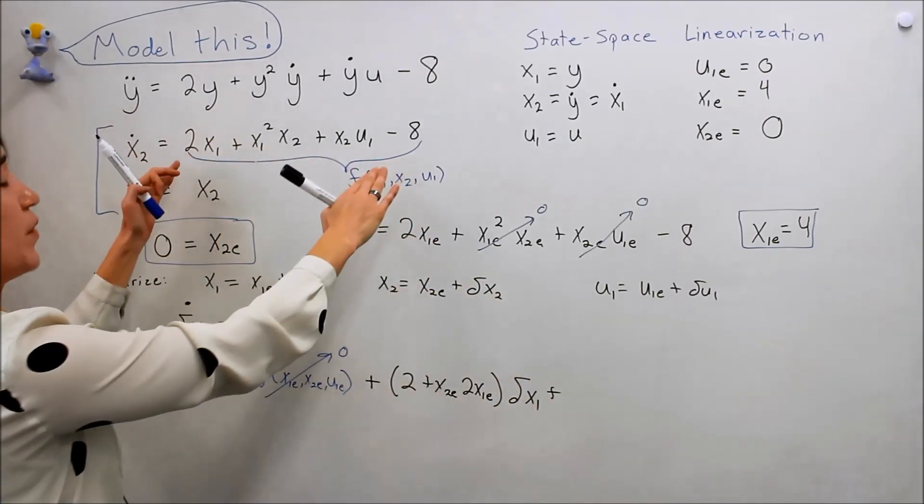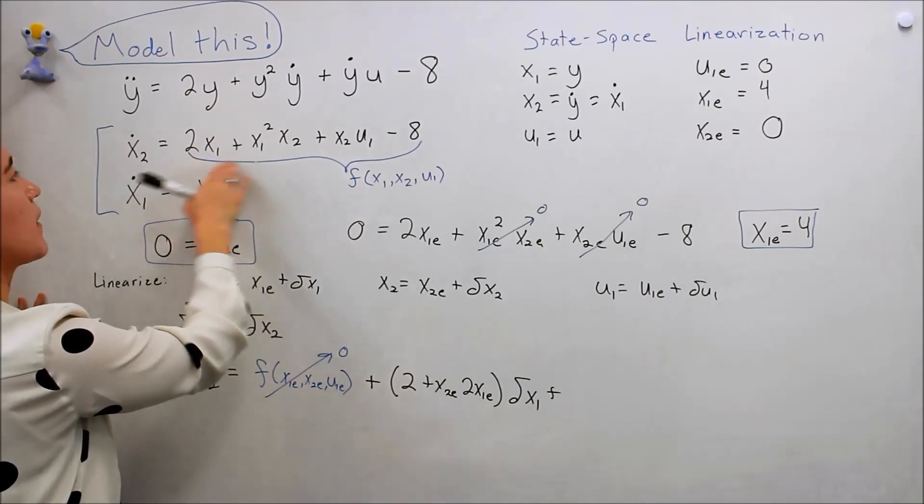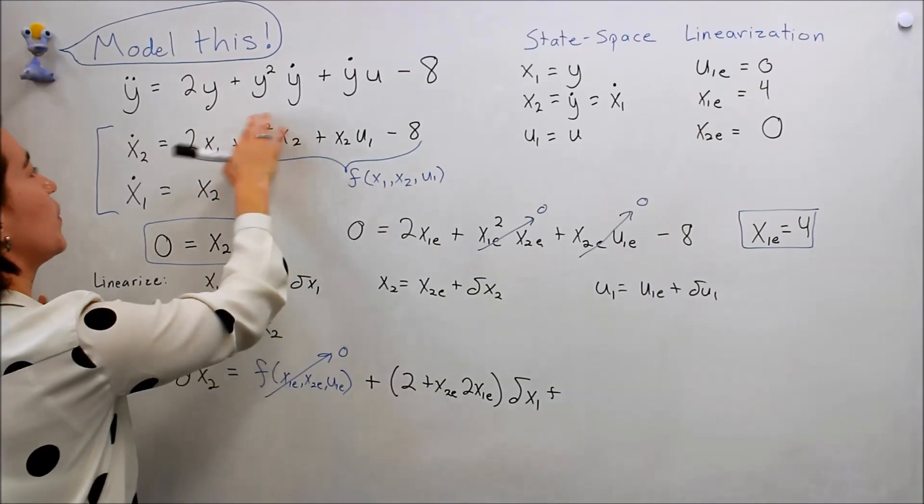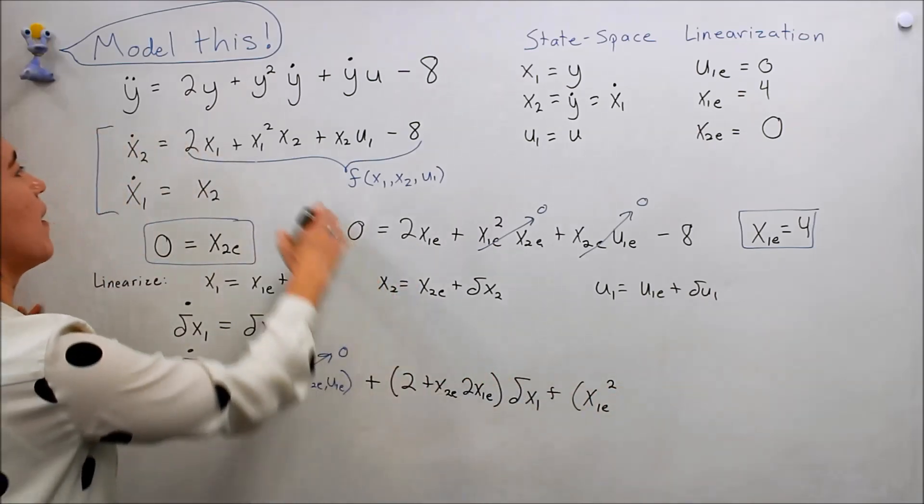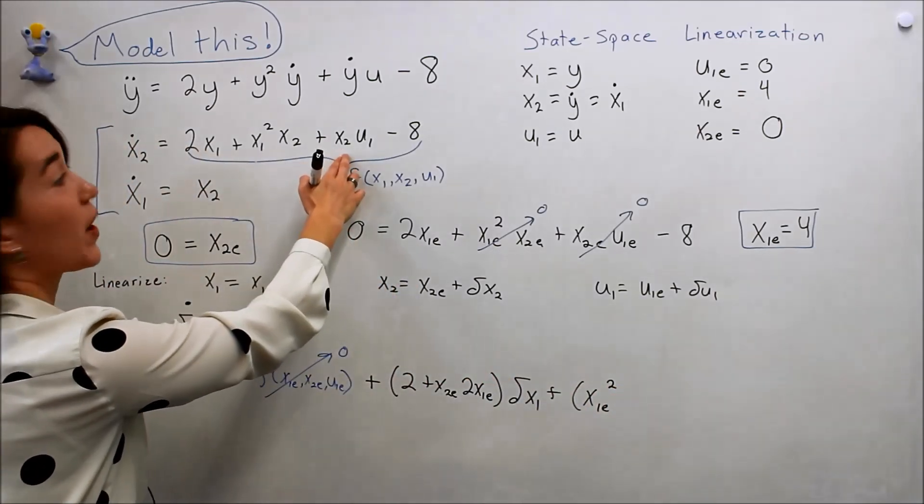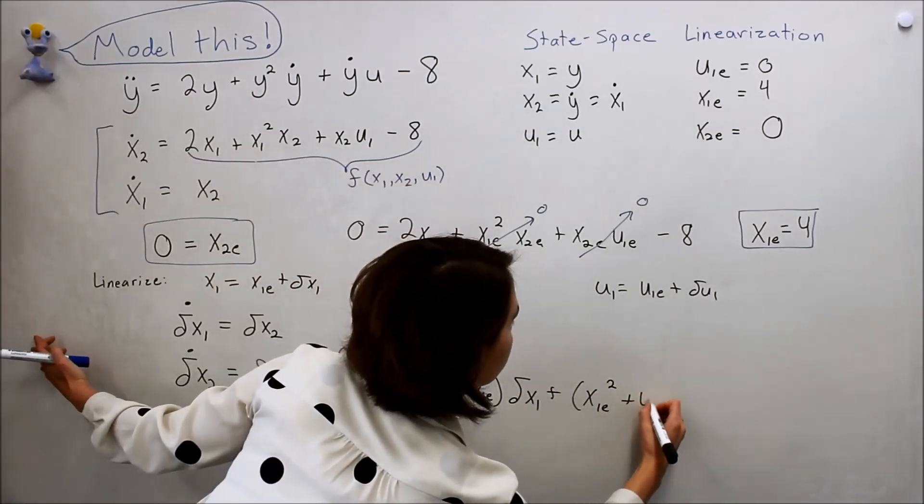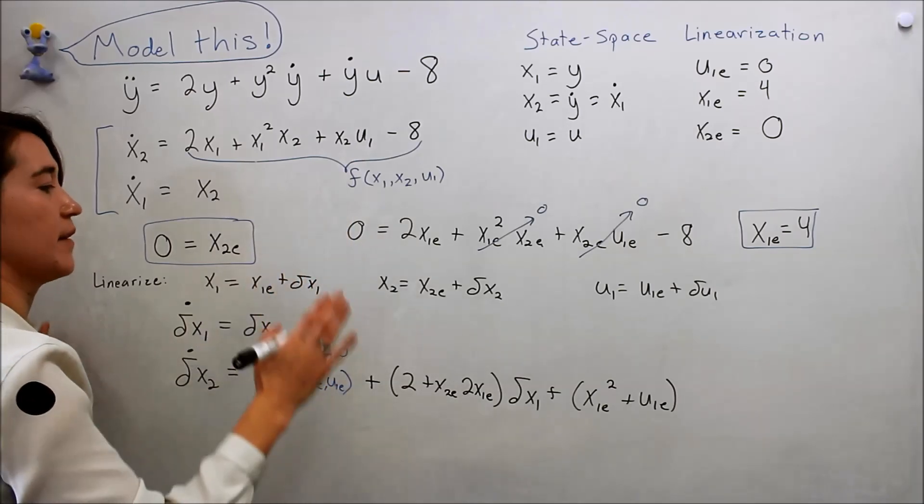So now let's do the same thing, take the partial derivative in terms of x2. Nothing here. Here we take the derivative of x2 in terms of x2, we'll just get x1 squared at the equilibrium point squared. This has an x2 as well, but we take the derivative, we'll just get u1e, and that's zero. Almost there. That's our x2.